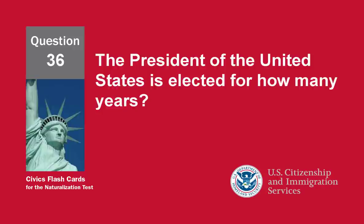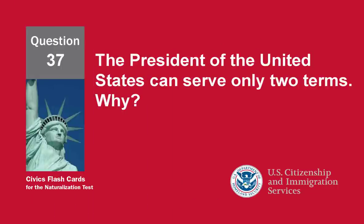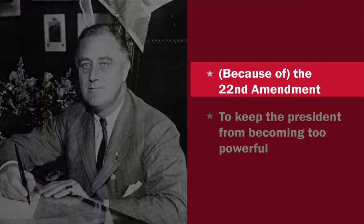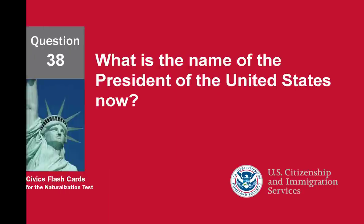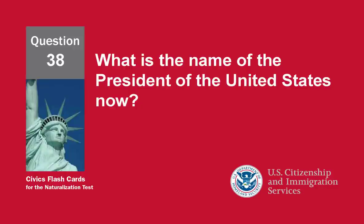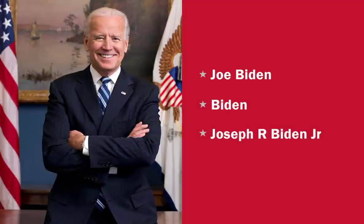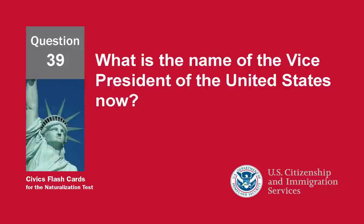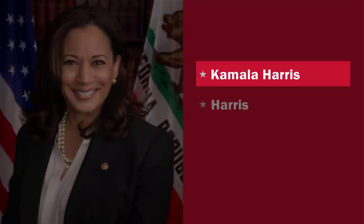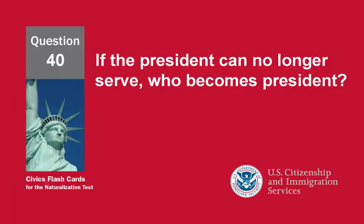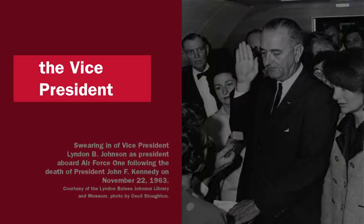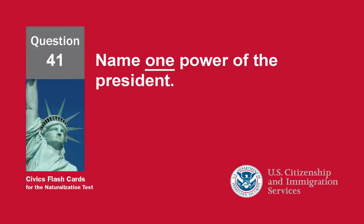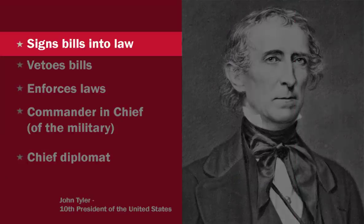The President of the United States is elected for how many years? Four years. The President of the United States can serve only two terms. Why? Because of the 22nd Amendment. What is the name of the President of the United States now? Joe Biden. What is the name of the Vice President of the United States now? Kamala Harris. If the President can no longer serve, who becomes President? The Vice President. Name one power of the President. Signs bills into law.